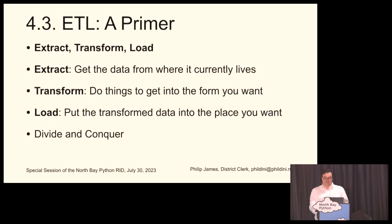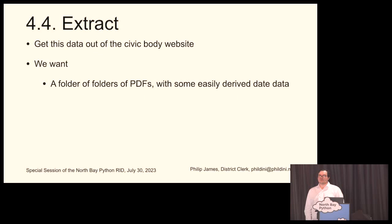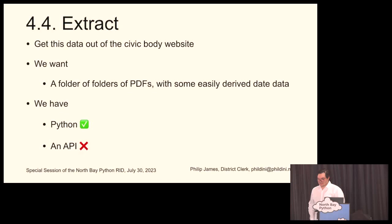Extract — what are we trying to do? We want to get this data out of the civic body website, which means we want a folder of PDFs with some easily derived date data so we can associate it with meeting dates. We have Python, but we need an API. And spoiler: for most municipalities, for most civic bodies, there are not easy APIs for this. So we're going to have to do a tiny bit of scraping and reverse engineering to figure out how to get an API we can actually use.